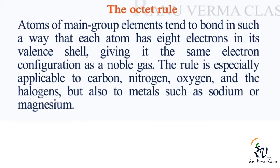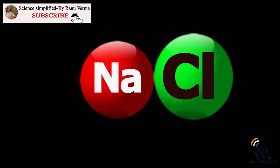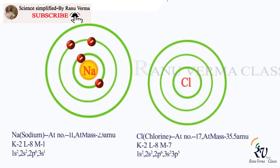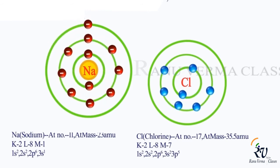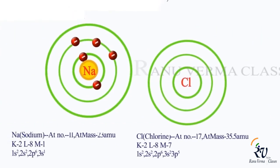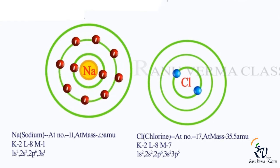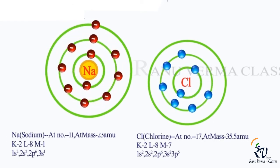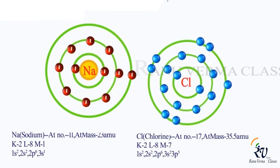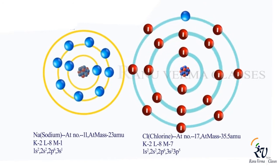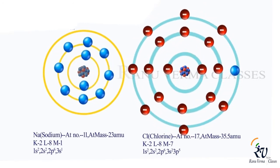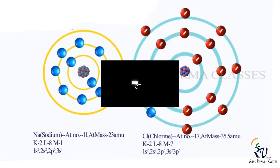Let's see an example. In the case of sodium chloride, sodium has 11 electrons and chlorine has 17 electrons. The electronic configuration of sodium is 2, 8, 1 while the electronic configuration of chlorine is 2, 8, 7. Sodium donates 1 electron and chlorine accepts 1 electron, completing 8 electrons in the outermost shell for each. This is an example of an ionic bond.